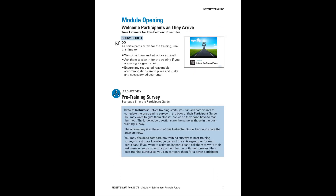Module opening: there are prompts such as say, ask, do, and show slide — those are instructions throughout the module to give you navigation points on what to do at that particular time. Showing slide one, which is the title slide of the module. As in every module of the Money Smart for Adults training, you're going to complete a few tasks such as welcoming participants as they arrive, introduce yourself, ask them to sign in, and ensure any requested reasonable accommodations are in place.